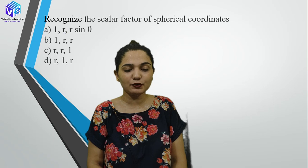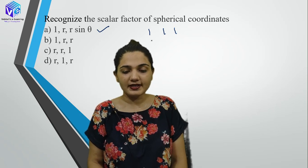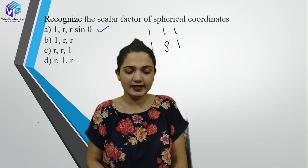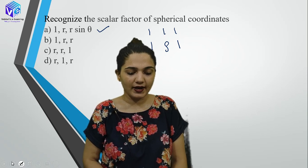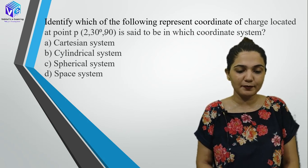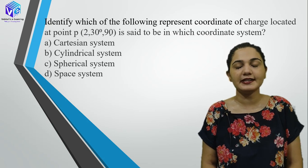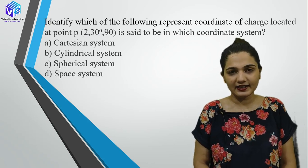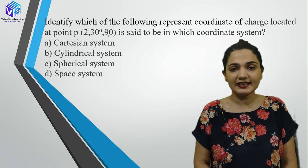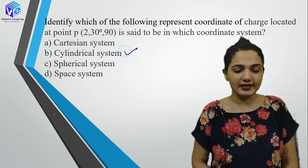Recognize the scalar factor of spherical coordinates — it is 1, r, r·sinθ. For Cartesian it is 1,1,1 and for cylindrical it is 1, ρ, 1. Next question: point P(2, 30°, 90) — identify the coordinate system. The 90 here is not 90 degrees — it is a value, so with one angle and two other values, this is a cylindrical coordinate system.